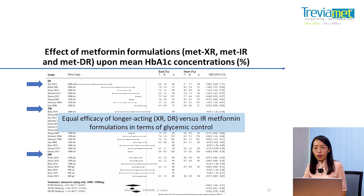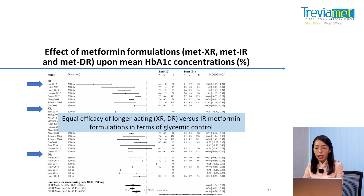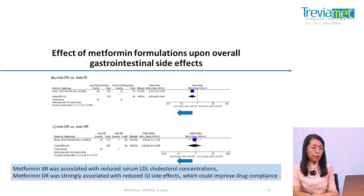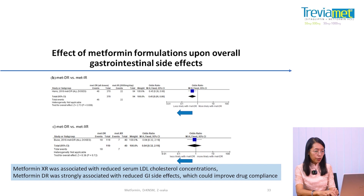Regarding the effect of metformin formulation on hemoglobin A1C: extended release, immediate release, and delayed release formulations all achieve similar HbA1C reduction. Overall, GI side effects differ between immediate release and extended release, with extended release having fewer GI side effects.